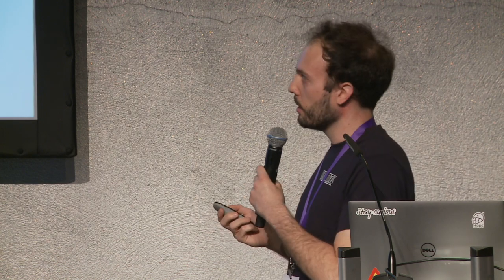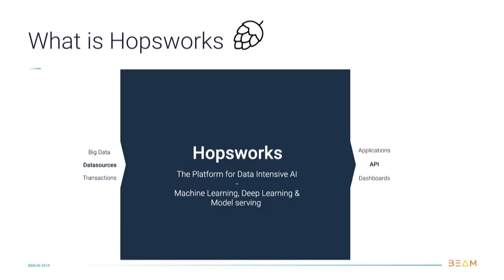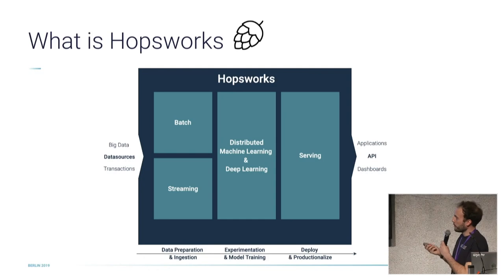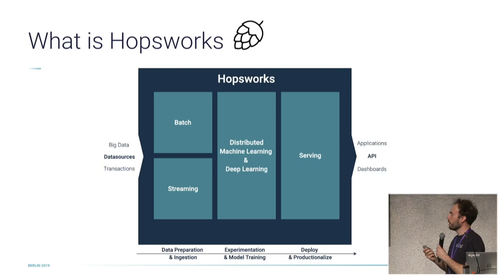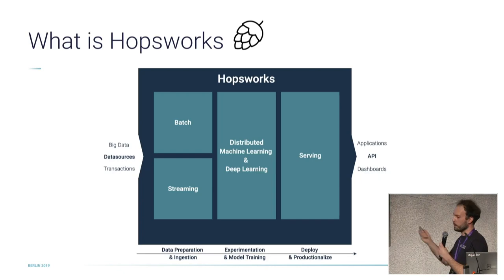So what is Hopsworks? The bird's-eye view: it's an open-source platform for data-intensive AI. It gives your data engineers and data scientists all the tools they need to implement such pipelines. In Hopsworks you can do both batch and stream processing. You have your data sources, then you can do distributed machine learning and deep learning with GPUs, and then you can do serving to serve your model.